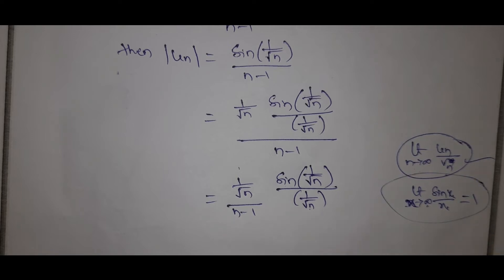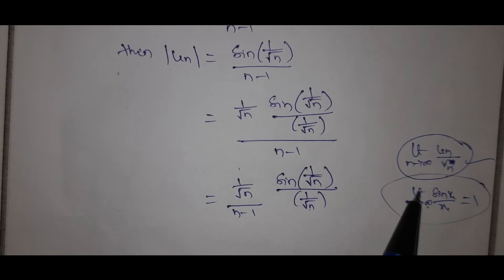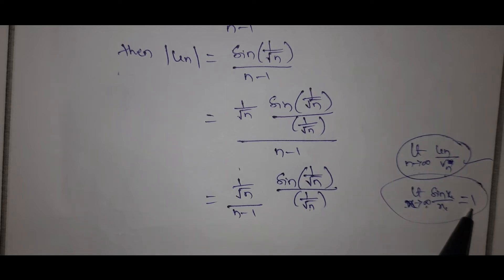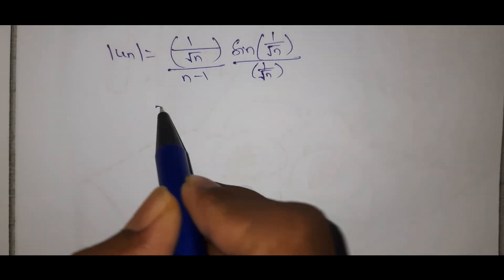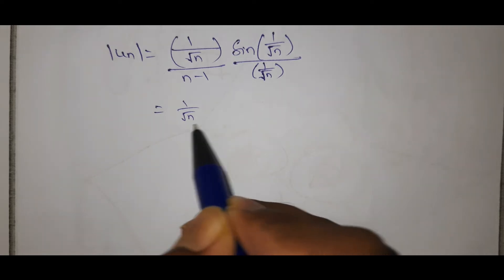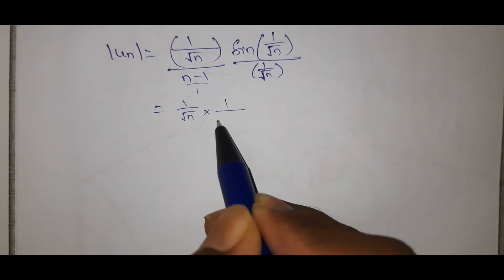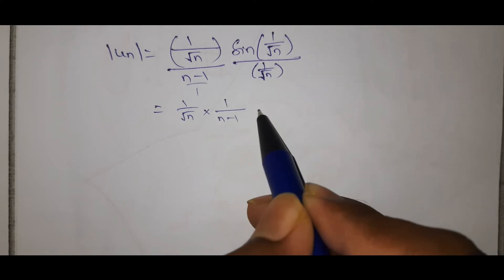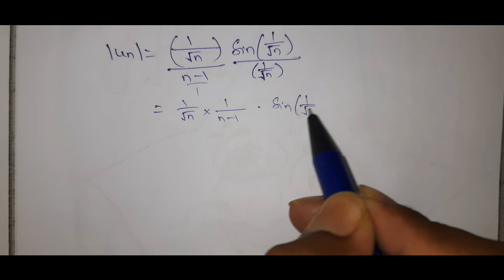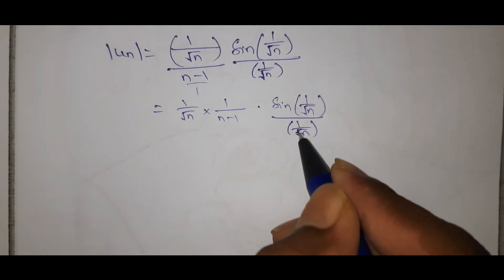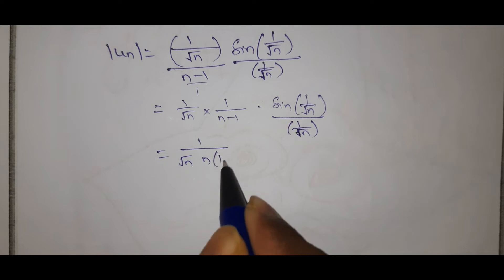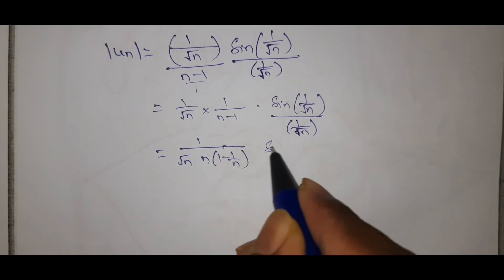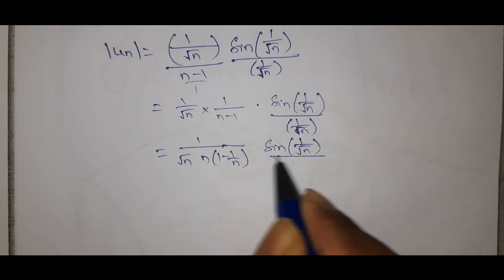You already know this limit from the limits topic: limit x to infinity of sin(x)/x equals 1. In our case, x is replaced by 1/√n. Multiplying through: (1/√n) · sin(1/√n) / (n-1), we can factor out n from the denominator to get 1/(n · (1 - 1/n)).